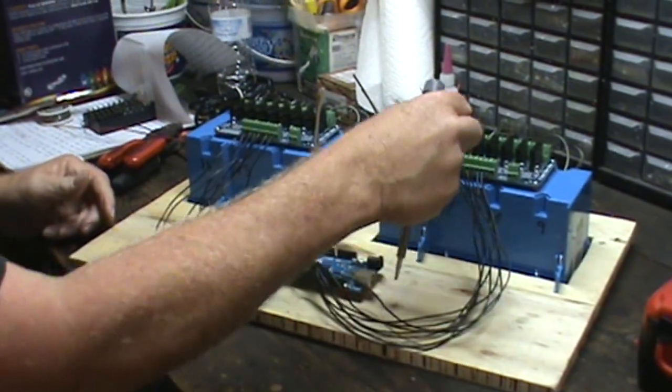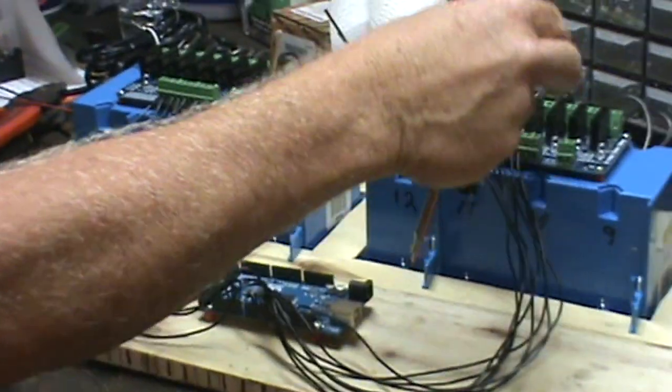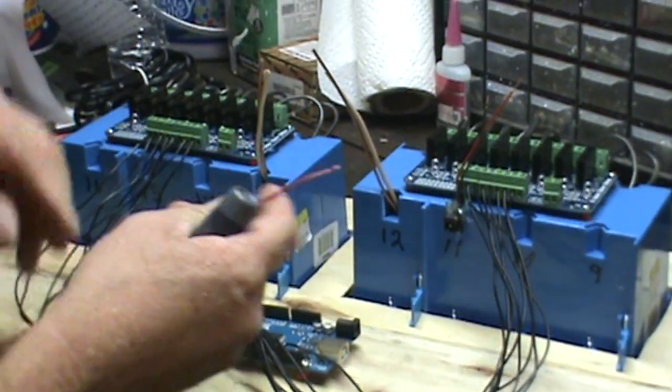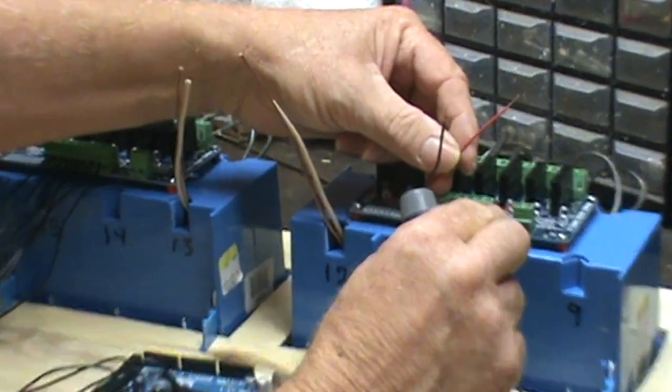Now we're going to attach our five volt wires onto our relay boards. Once again if you look you'll see that the first one is ground, the second one is the voltage.